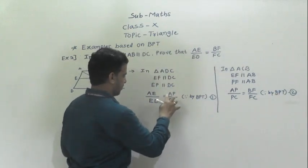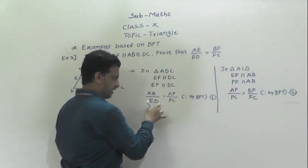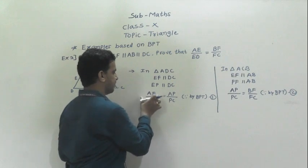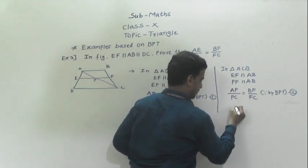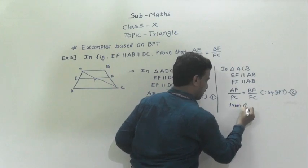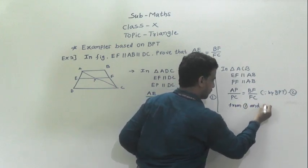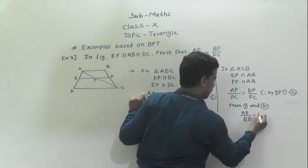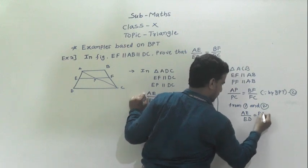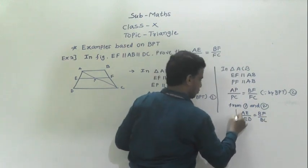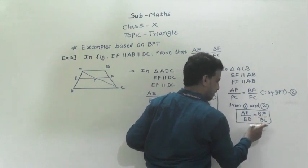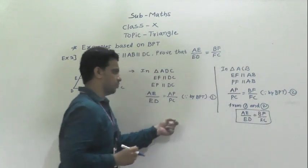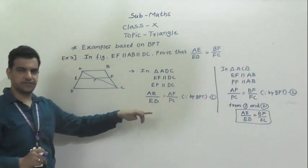From equations 1 and 2: AP by PC equals AE by ED, and AP by PC equals BF by FC. So we can write AE by ED is equal to BF by FC. Hence we have proved that AE by ED is equal to BF by FC.